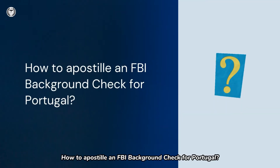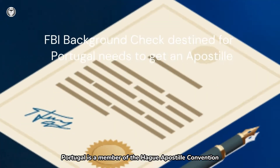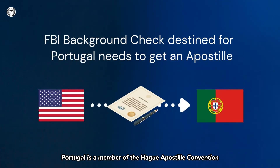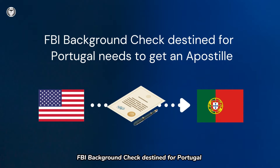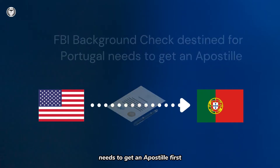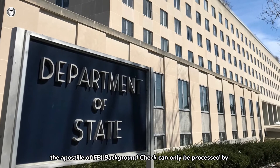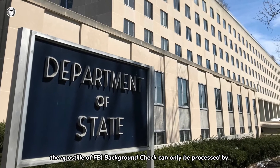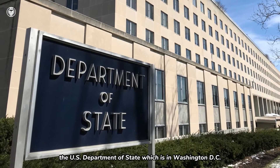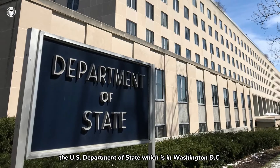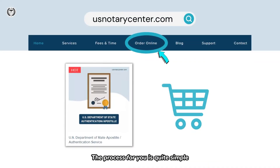How to apostille an FBI Background Check for Portugal? Portugal is a member of the Hague Apostille Convention. An FBI Background Check destined for Portugal needs to get an apostille first. In the United States, the apostille of an FBI Background Check can only be processed by the U.S. Department of State, which is in Washington, D.C. The process for you is quite simple.